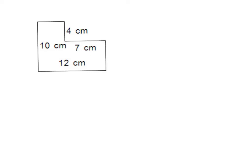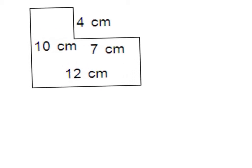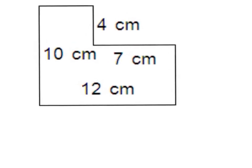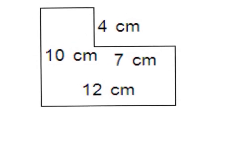My assignment is to find the area and perimeter of this oddly shaped, irregular figure. Perimeter is the distance around it, so the first thing I'm going to do is try to mark my sides to figure out what goes with what.